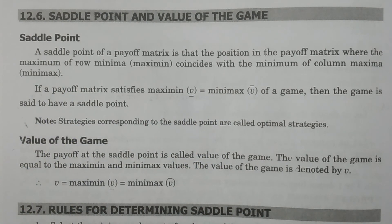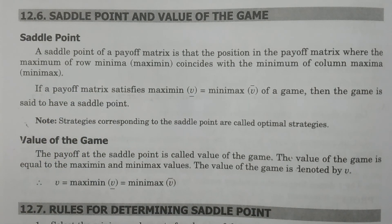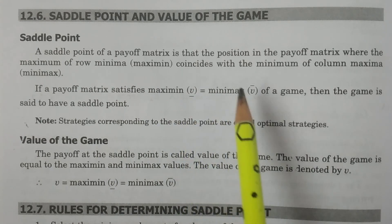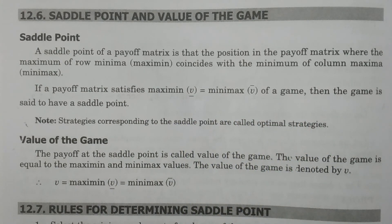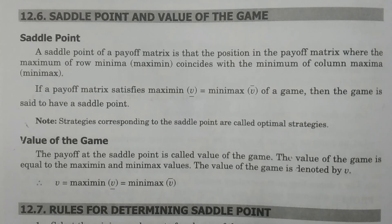In other words, the position at which the maximin value and minimax value coincide — meaning they are equal — at that particular point is called the saddle point. The position of the payoff matrix where maximin and minimax coincide, that is, the maximum of row minima and minimum of column maxima are equal, is known as the saddle point.